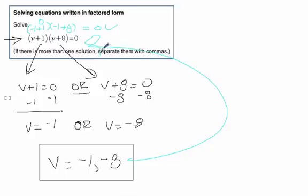If we put -8 in, it's the same thing. It's (-8 + 1)(-8 + 8), which is (-7)(0). Anything times 0 is 0. That's it.